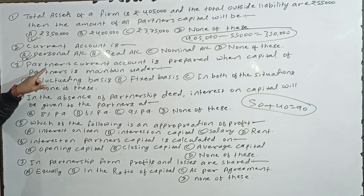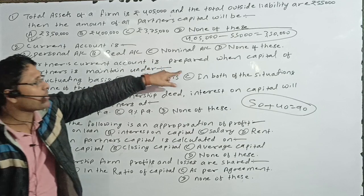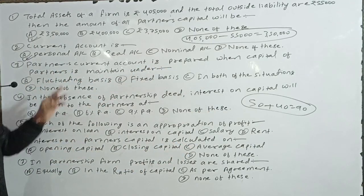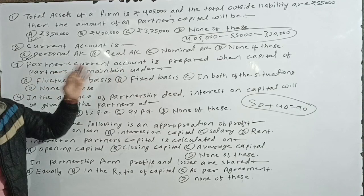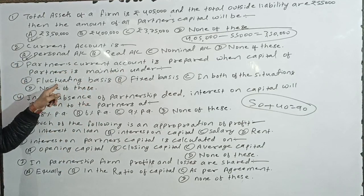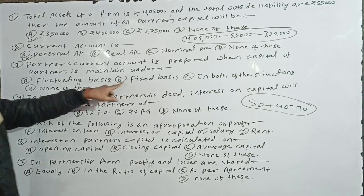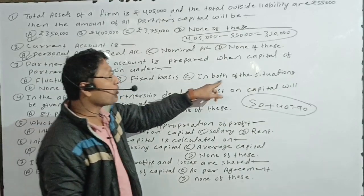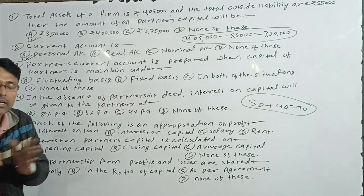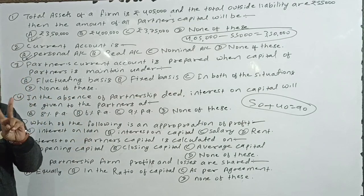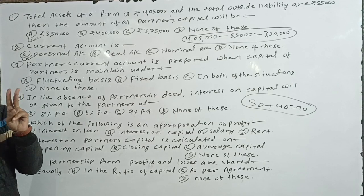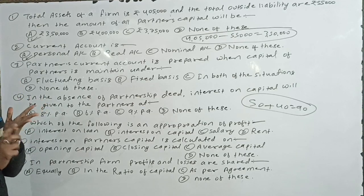Look at the next point. Partners' current account is prepared when partners' capital is maintained under which method? Is it fixed basis, fluctuating basis, both situations, or none of these? Capital accounts are made using two methods: fixed method and fluctuating method. Under the fixed method, two accounts are made — capital account and current account.